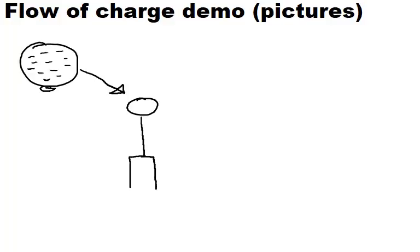Now we're going to practice with an electroscope. We have a negatively charged balloon. We bring it close to the pole of the electroscope, and we want to draw what happens. Go ahead and pause the clip and draw what happens. Remember, the most important thing in this unit is that atoms are fixed — the only thing that can move are electrons. Give this a try, and when you're ready to check, you can hit play.